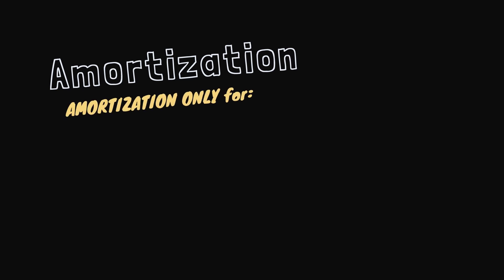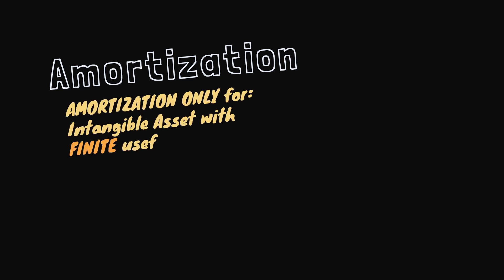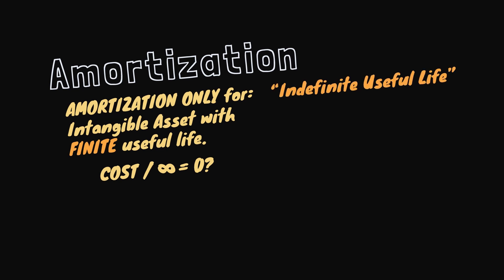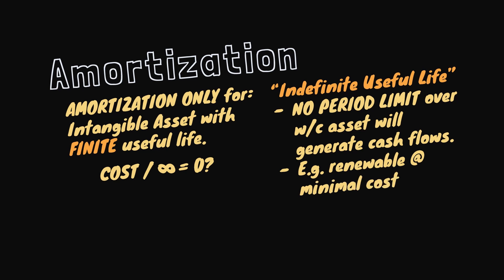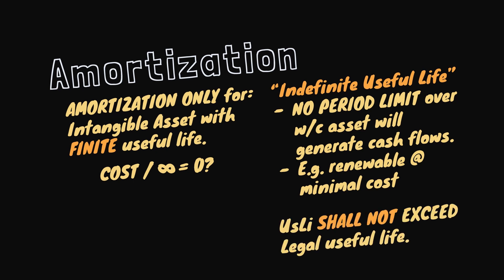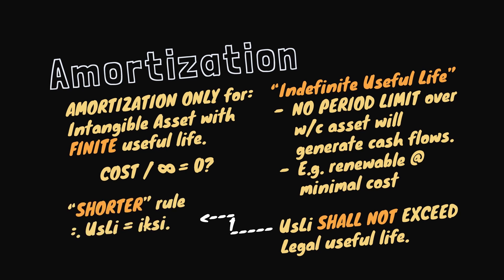Amortization under both models depends on the useful life of the intangible asset. Only intangible assets with a finite useful life are amortized, since it would not make sense allocating an amount over infinity. The useful life of an asset is indefinite when there is no foreseeable limit to the period over which the asset is expected to generate net cash flows — especially if the entity can renew the right to the asset at a minimal cost. However, the useful life of assets arising from a contract or legal right shall not exceed the period under the contract or legal right; therefore, we use the shorter between the useful life and the legal life.